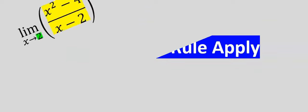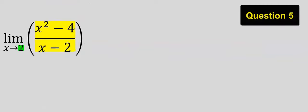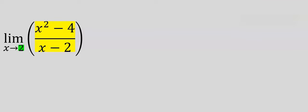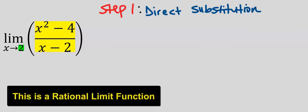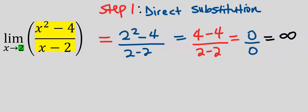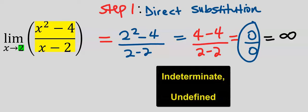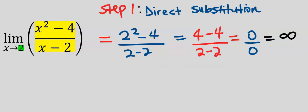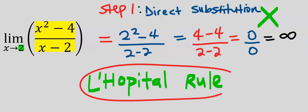Next, when does L'Hôpital's rule apply? To understand this, let's consider this question: the limit of x squared minus 4 over x minus 2 as x tends to 2. Step 1: apply direct substitution. By applying direct substitution, we got an indeterminate form of 0 over 0, which is undefined. Hence, direct substitution has failed, and L'Hôpital's rule applies.